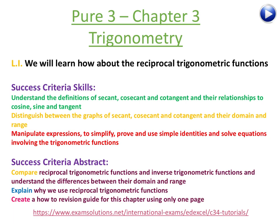Okay, so Pure 3, chapter 3, trigonometry. We're going to learn about secant, cosecant and cotangent, and their relationships to cosine, sine and tangent. We're going to come back to what we did in Pure 2 where we're manipulating trig identities, and we're going to have a look at reciprocal trigonometric functions, inverse trigonometric functions, and understand the difference between the domain and range.